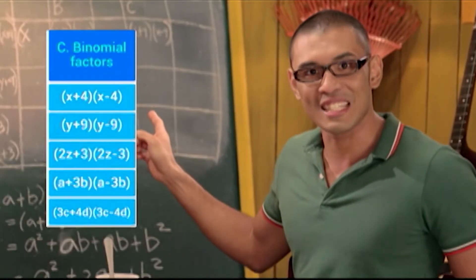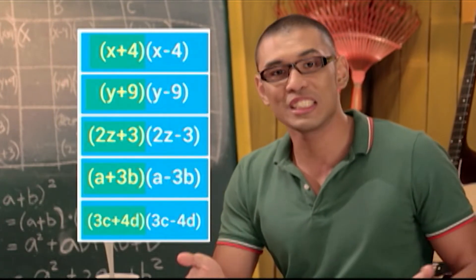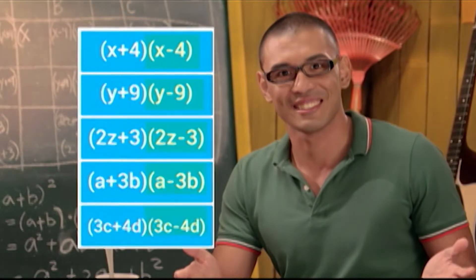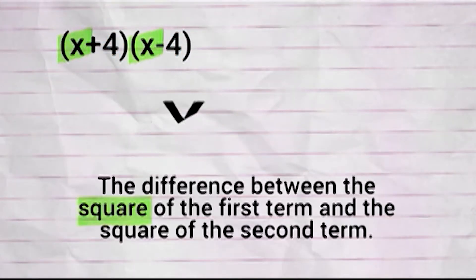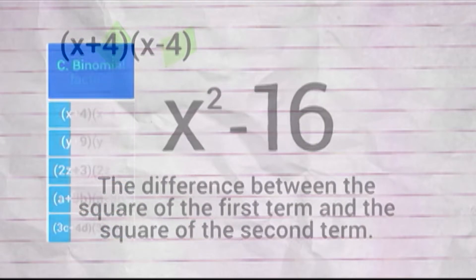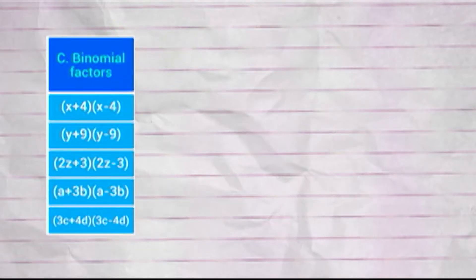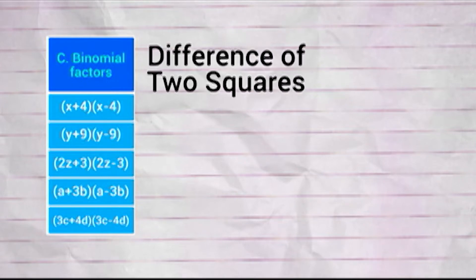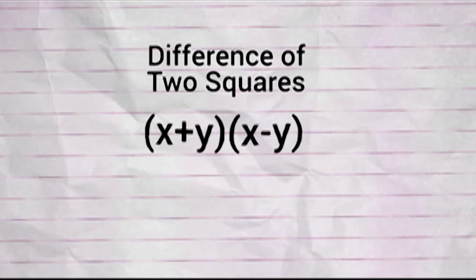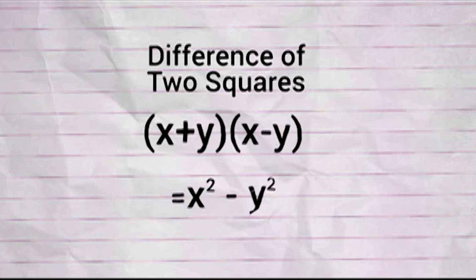The factors in column C consist of two terms — one is the sum and the other is the difference of the two terms. Observe that the product is found by getting the difference between the square of the first term and the square of the second term. Each product in column C is referred to as the difference of two squares. In symbols: quantity X plus Y times quantity X minus Y is equal to X squared minus Y squared.